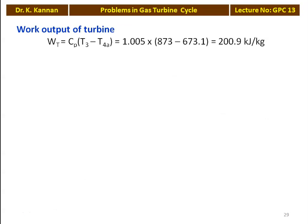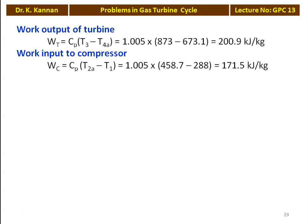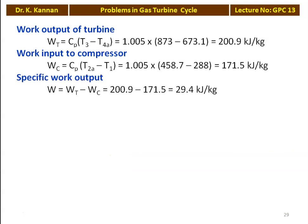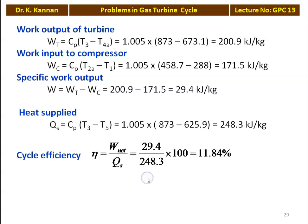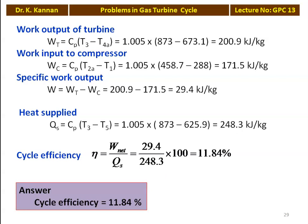We calculate the work output of the turbine: Wt equal to Cp into (T3 minus T4a), which is 1.005 into (873 minus 673.1) equal to 200.9 kJ/kg. Compressor work input: Wc equal to Cp into (T2a minus T1), which is 1.005 into (458.7 minus 288) equal to 171.5 kJ/kg. Specific work output W equal to Wt minus Wc, which is 200.9 minus 171.5 equal to 29.4 kJ/kg. Heat supplied Qs equal to Cp into (T3 minus T5), which is 1.005 into (873 minus 625.9) equal to 248.3 kJ/kg. Cycle efficiency eta equal to net work divided by heat supplied: 29.4 divided by 248.3 into 100 equal to 11.84%. The cycle efficiency is 11.84 percent.